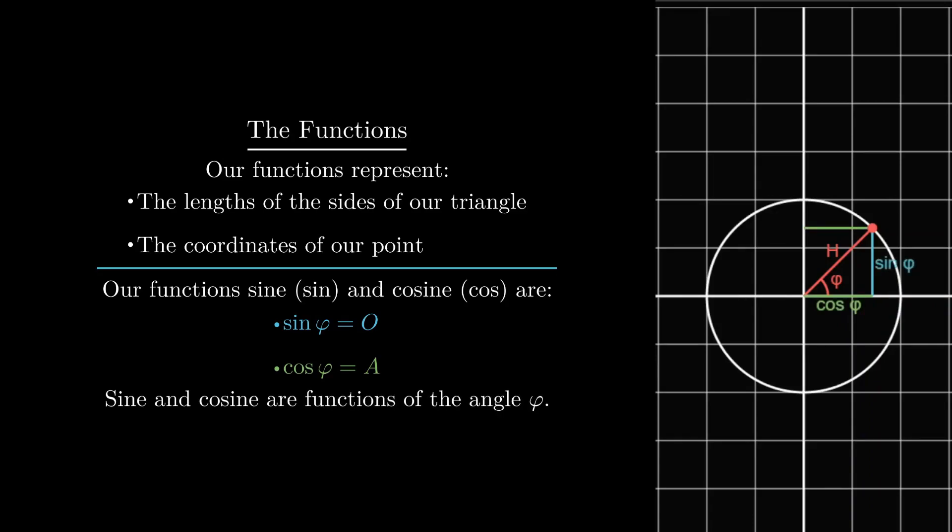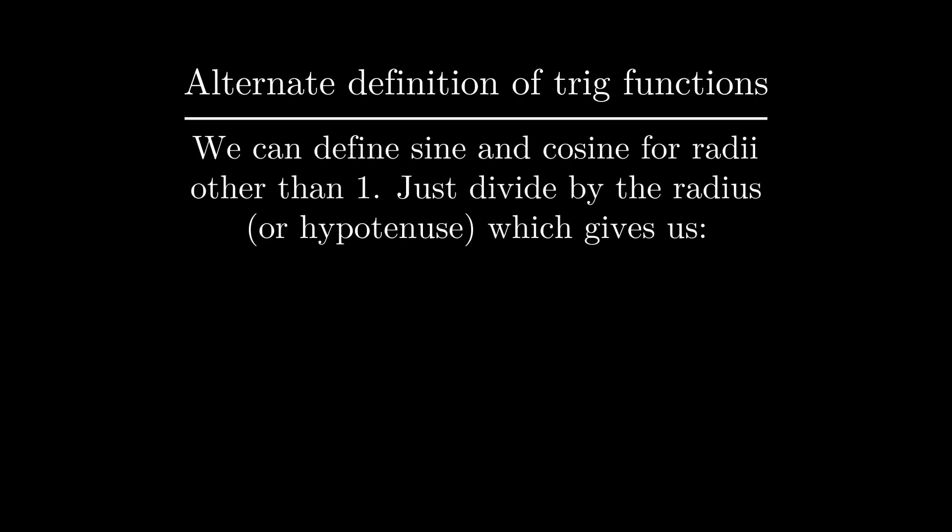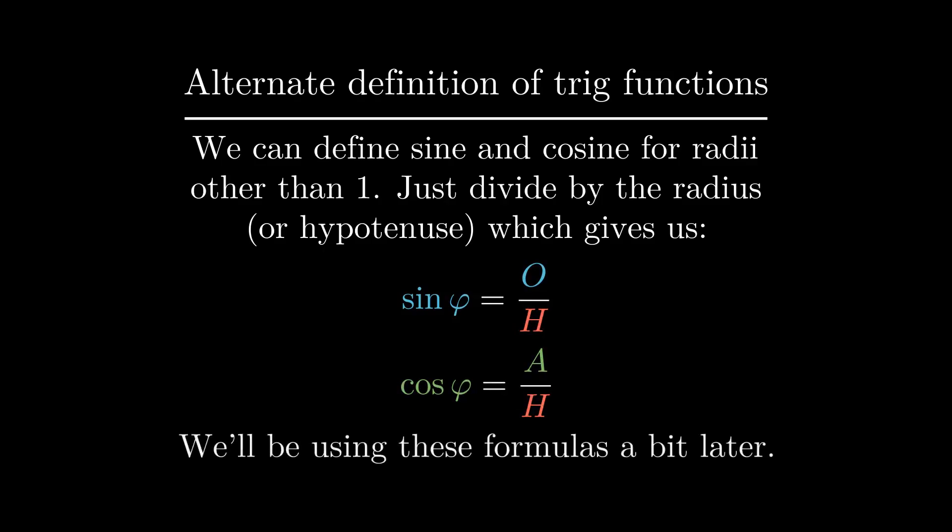Since these vary as we change our angle, we write them as functions of our angle. We can also define sine and cosine in terms of circles with any radius other than 1. We just divide the lengths of the opposite and adjacent by the hypotenuse, the radius of the circle, to get the values of sine and cosine. If you've studied trig in school, you probably learned the trig functions this way. We'll make use of this fact at the end of the video.